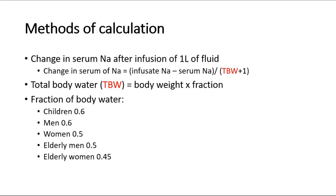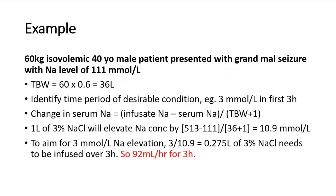Let's look at this example scenario: a 60 kg isovolemic 40-year-old male patient presented with grand mal seizure with a sodium level of 111 millimole per liter. First, calculate the total body water: 60 kg times 0.6, which is the fraction for men, giving 36 liters of TBW.